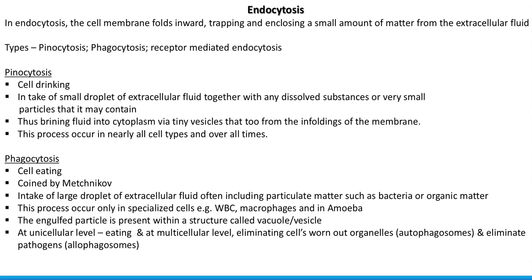For example, an old mitochondrion can be engulfed by the phagocytosis process and completely digested. This elimination of worn-out organelles is referred to as autophagosome formation. Phagocytosis also plays a role in eliminating pathogens by phagocytizing them when they enter the body — this is called allophagocytosis, and the structure involved is referred to as an allophagosome.